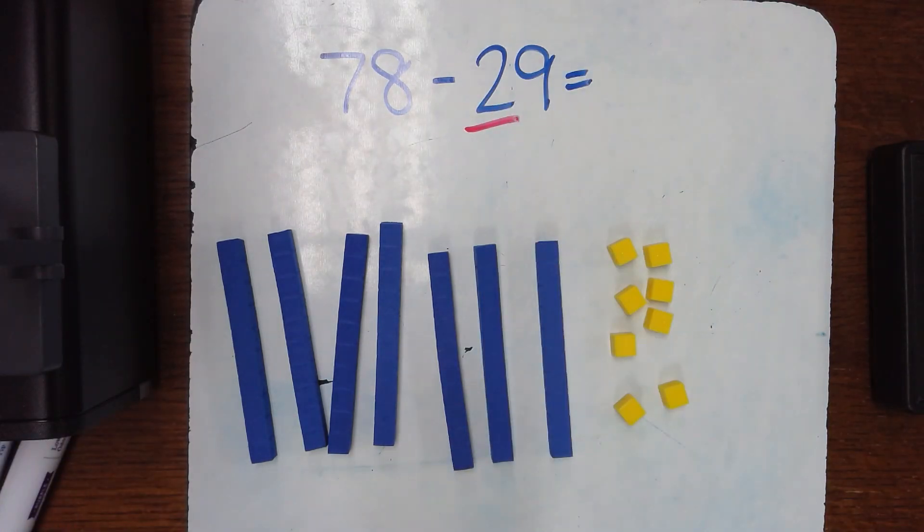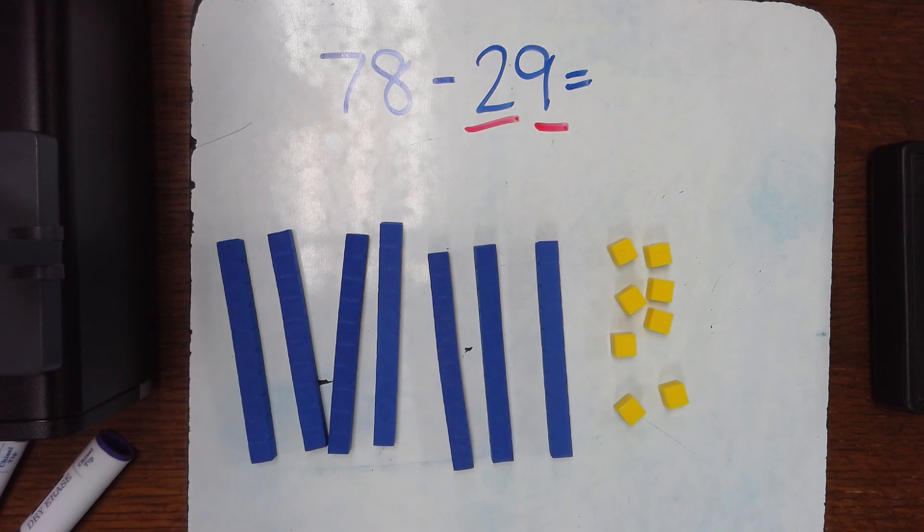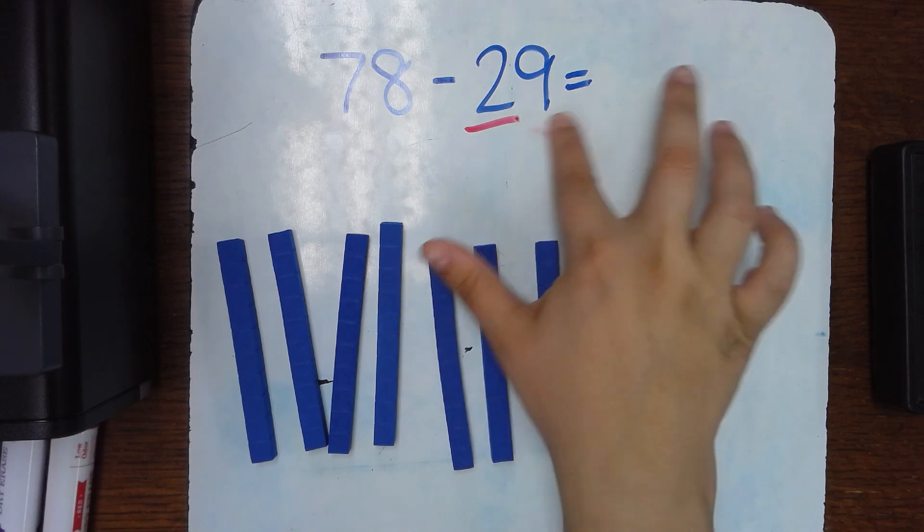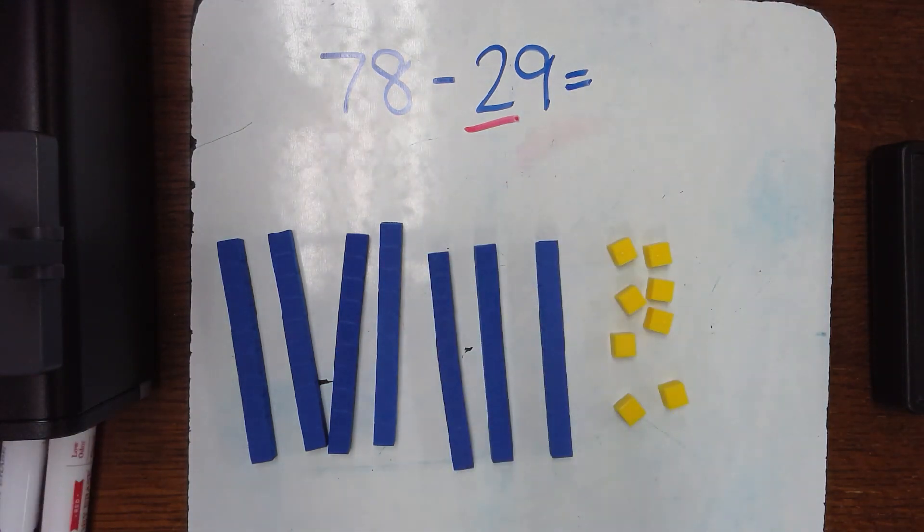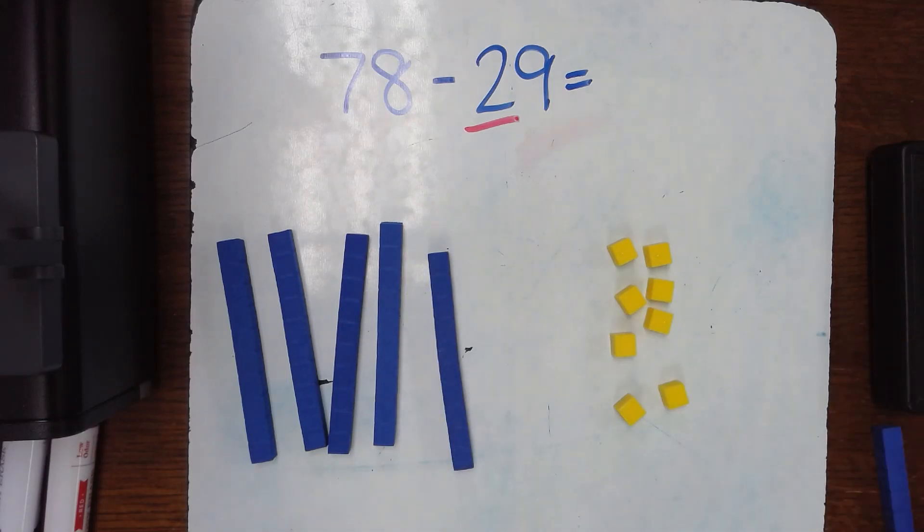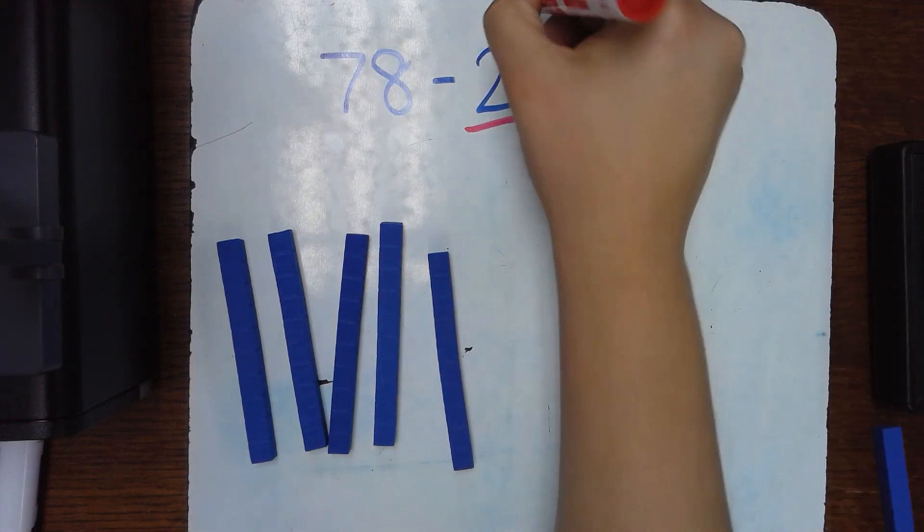So if I was going to subtract this I have two options. I could start with the tens or I could start with the ones. Either way it doesn't matter using this strategy. The old strategy of borrowing from your neighbor, order does matter, but in this one it doesn't. So I'm going to start with the tens because I like counting by tens. They're friendly numbers. So I'm going to take 10 and 20 off my board. I've already subtracted 20 so I'm going to put a check.